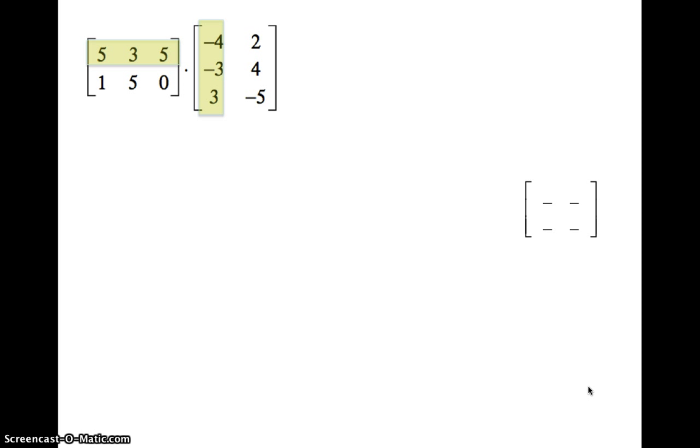You do row one and column one, like we've done before. This time now we have three corresponding elements that we multiply together. Five times negative four, three times negative three, five times three adds to negative 14. And that goes in column one, row one of our product matrix.